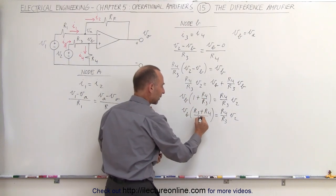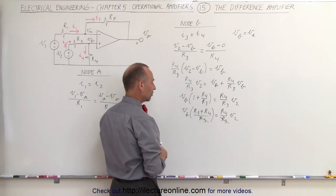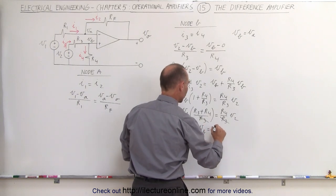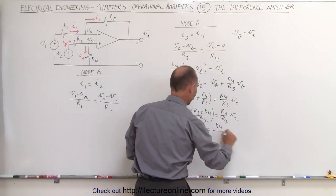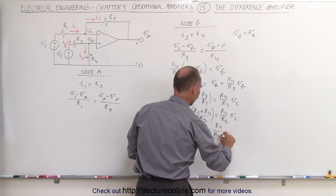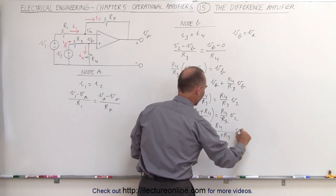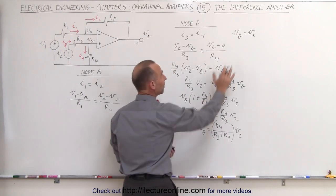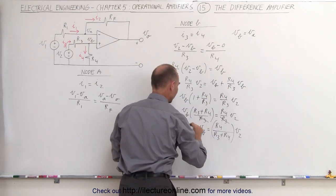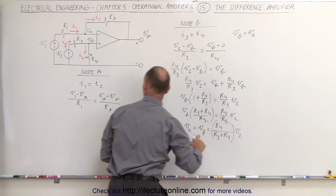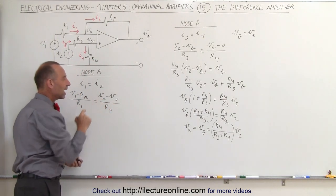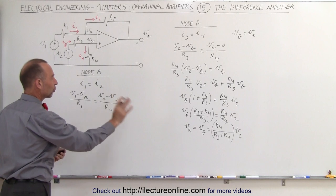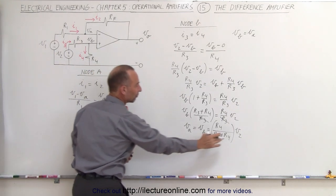We can cancel R3 from both sides of the equation, and finally write that VB equals R4 divided by (R3 plus R4) times V2. And of course since VB equals VA, we can say this is also equal to VA, which we can then plug into our node A equation.